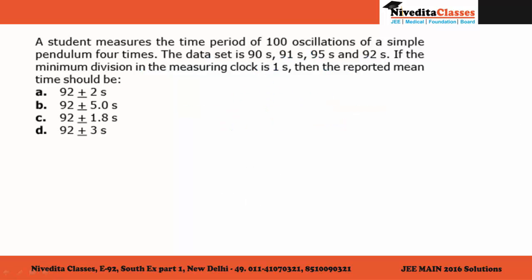The question says that a student has taken four different observations: 90, 91, 95, and 92. Now we have to tell how this measurement will be reported.